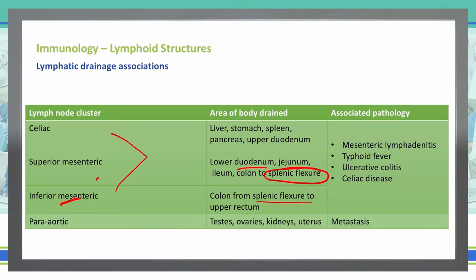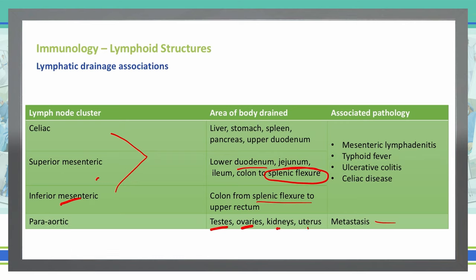The para-aortic lymph node system drains the testes, ovaries, kidneys, and uterus, and is most commonly associated with metastasis. The testes specifically develop up in the abdomen and then descend, so their venous and arterial blood supply, origination, and lymph drainage all come from higher up in the body than where they currently reside.